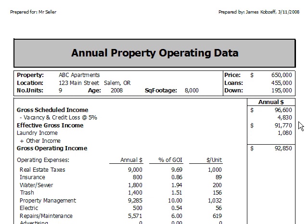Then, to that, you want to add any other income the property generates, like income from coin-operated washers and dryers, for instance. That would result in the property's gross operating income, which is important because gross operating income represents the amount of money available to pay the bills.